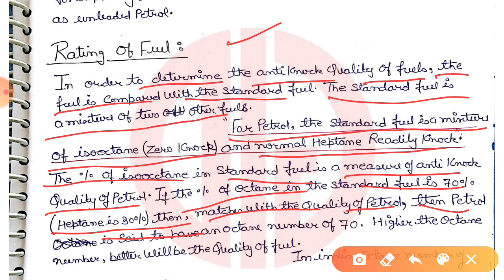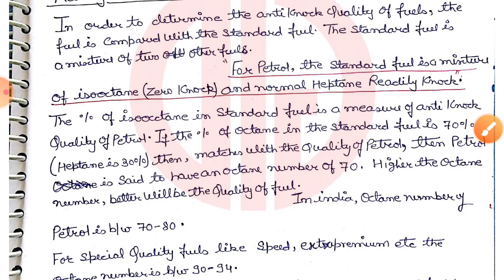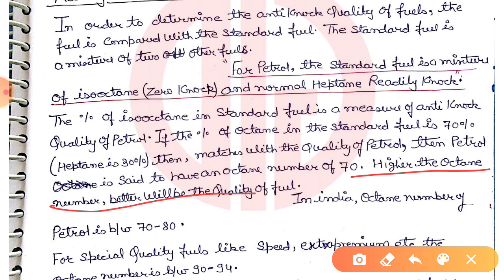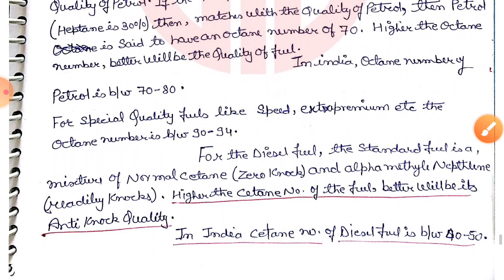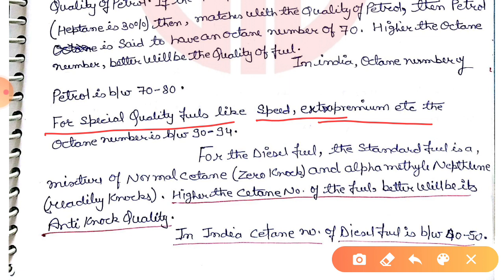If we have 70% isooctane, the octane number is 70. If we have 60% isooctane, the octane number is 60. The more the octane number, the better the quality of fuel. In India, the octane number of regular petrol is between 70 to 80. For special quality fuels like speed or extra premium fuel, the octane number is between 90 to 94, which is higher.